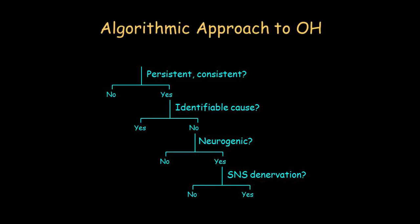When dealing with a patient referred for orthostatic hypotension, I think of four steps. The first is that orthostatic hypotension is a persistent, consistent thing if it's part of a disease. Often, most of the time, there's an identifiable cause, such as a drug. There can also be a secondary cause — diabetes would be a very common one.